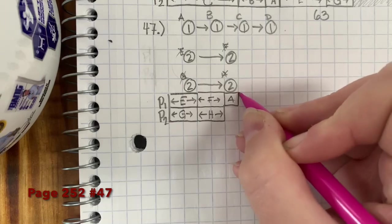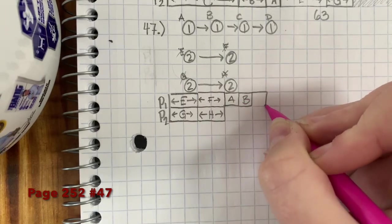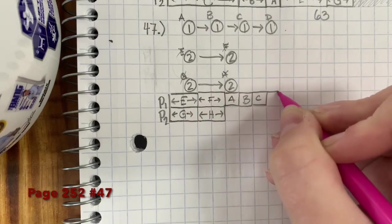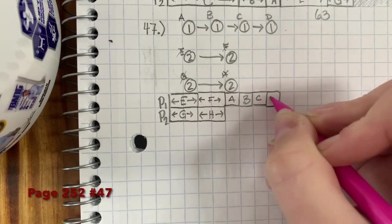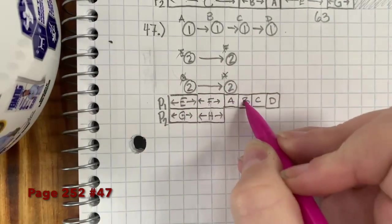Okay, then once A is complete, we can do B. Once B is complete, we can do C. Once C is complete, we can do D. Okay, so this would be 2, 4, 5, 6, 7, 8.